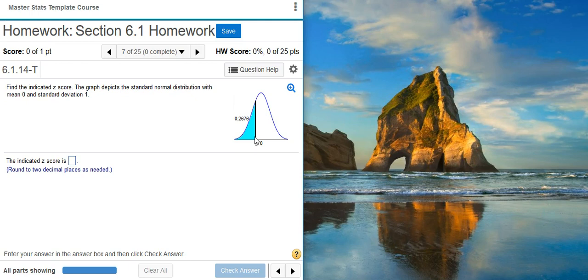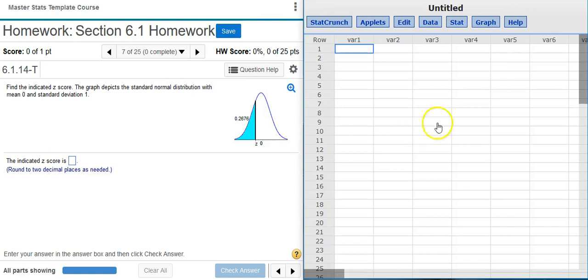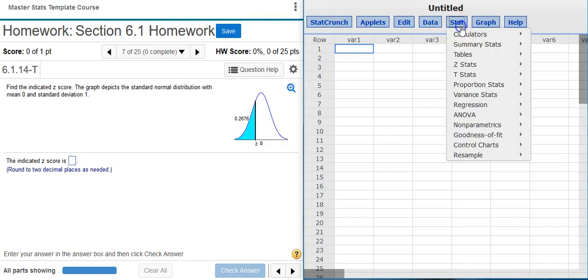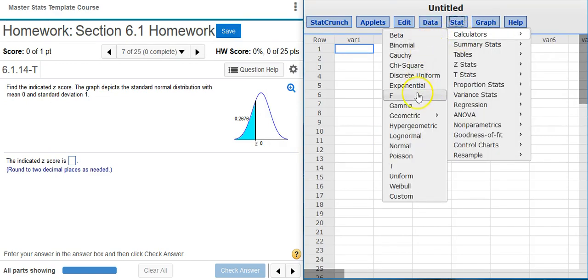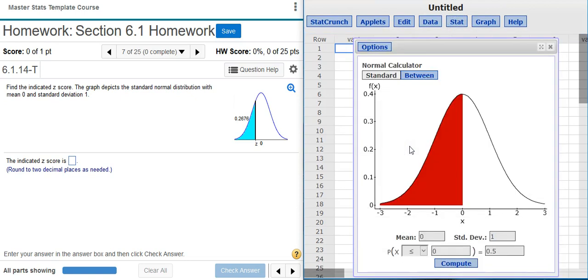So, the simplest way to do this in StatCrunch is to go to Stat, Calculators, Normal. This pulls up the normal calculator.